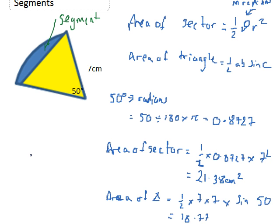The area of my segment equals the area of my sector, 21.38, minus the area of my triangle, 18.77. So 21.38 minus 18.77 gives me 2.61 cm².